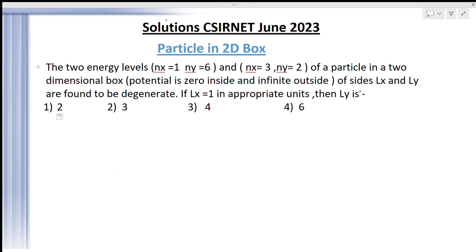What is the question? The two energy levels - we have given two energy levels, one we call 1 and another one we call 2. For the first level, NX is equal to 1 and NY is equal to 6. And for the second level, NX is equal to 3 and NY is equal to 2.